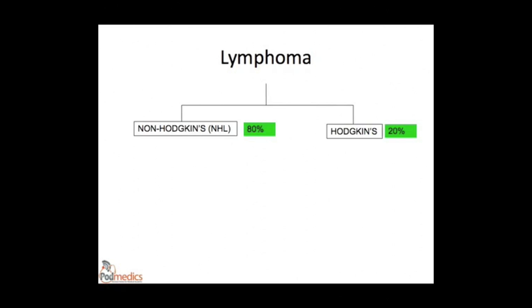Now we're going to consider malignancies of the lymphoid system, or lymphoma. Lymphoma typically presents as discrete tumour masses, either in the lymph nodes or in various extranodal locations. There are two basic categories: Hodgkin lymphoma and non-Hodgkin lymphoma, which respectively account for 20% and 80% of these neoplasms.